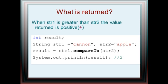When string1 is greater than string2, the value returned is a positive number. Say string1 is cannon, starting with a C, and string2 is apple. When string1.compareTo(string2), the result there is a positive number, in this instance is 2.